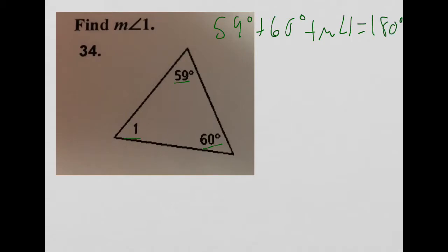So then I can just go ahead and solve for the measure of angle 1, that's going to be my ultimate goal. So 59 degrees plus 60 degrees is going to give me 119 degrees, plus the measure of angle 1 equals 180 degrees.